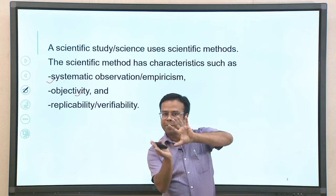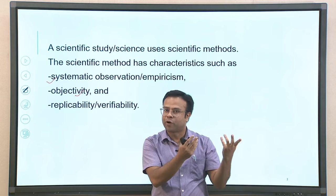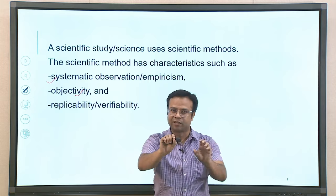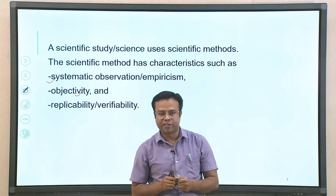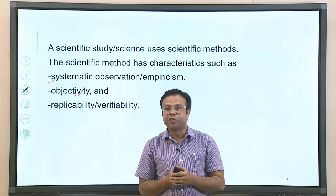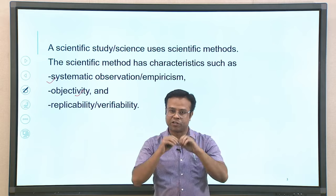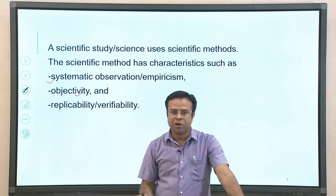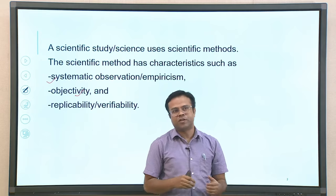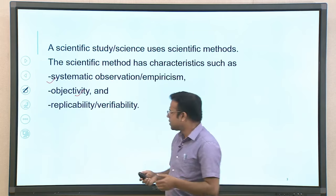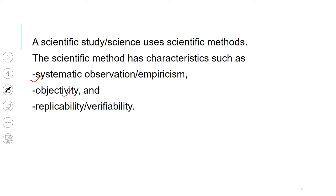Objectivity means you keep aside all your biases — whatever you think or feel — and look at the phenomenon as it is and report it. Subjectivity is the opposite: whatever you feel or think, you report that, which can change from time to time and place to place. Objectivity is more factual. So science uses objectivity as one of the characteristics of its method. The third important characteristic of science is called replicability or verifiability.